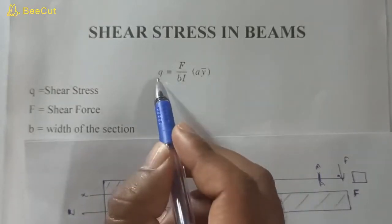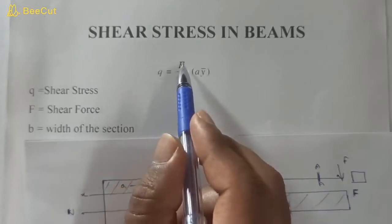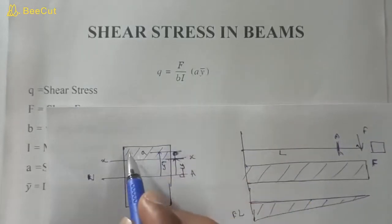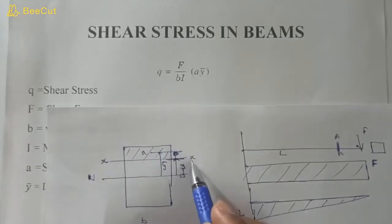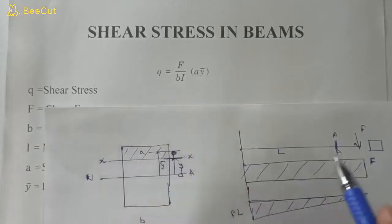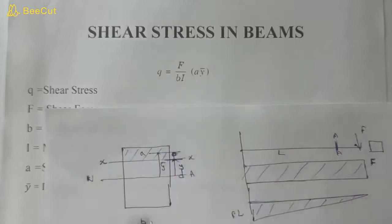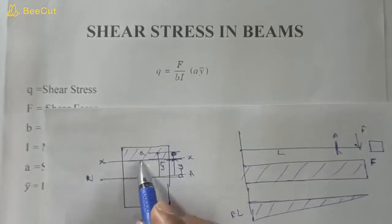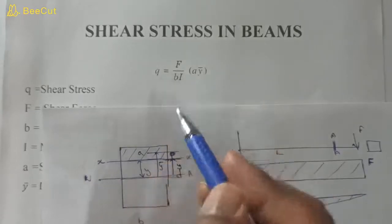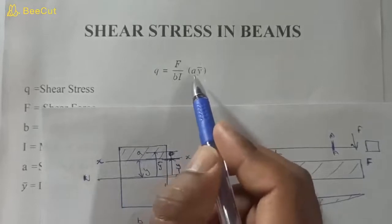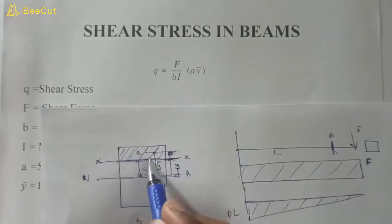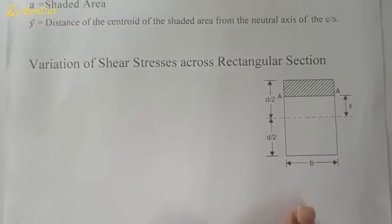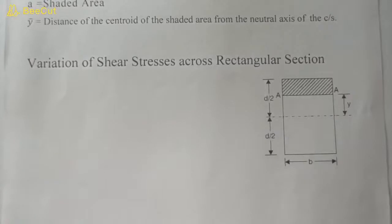To find shear stress variation across the section, we use the formula: shear stress τ = FAȳ / BI, where F is the shear force, B is the width of the beam, ȳ is the distance of the centroid of the area above the section from the neutral axis of the beam, I is the moment of inertia of the cross section, and A is the area above the section.